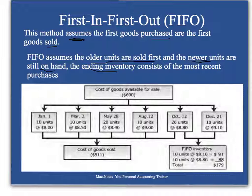Therefore, the cost of goods available for sale — let's say we had 10 units we bought in January, 10 in March, another 20 in May, another 10 in August, 20 in October, 10 in December. We have 80 units available for sale, and the total amount available for sale is $690.